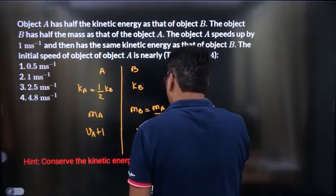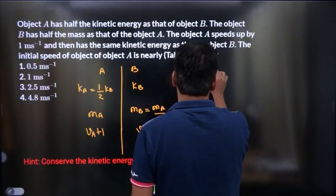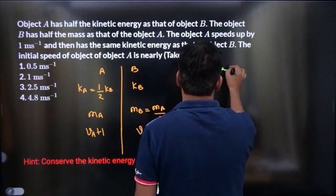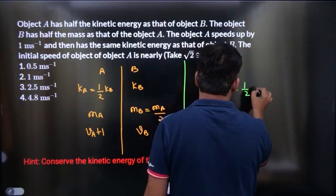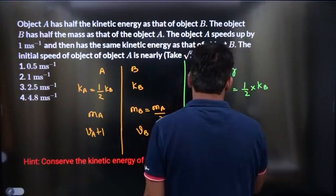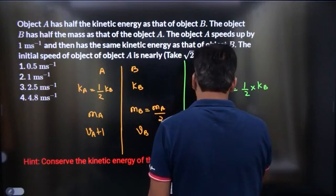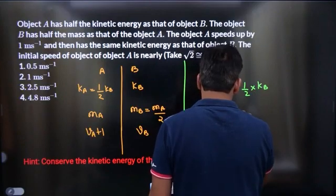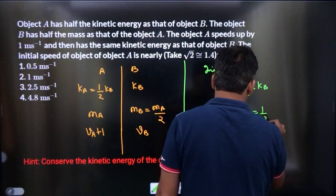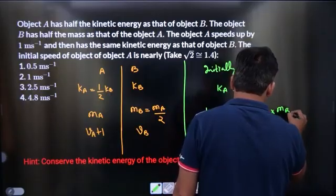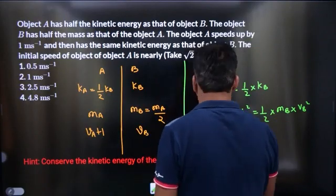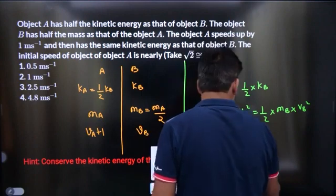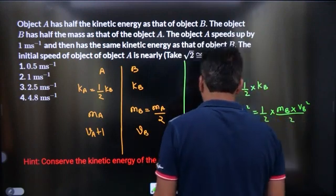Dear students, initially kinetic energy of A is half the kinetic energy of B. So this is half mass of A into VA square equals to half mass of B into VB square. Wait, one more half should be there, one for the kinetic energy.